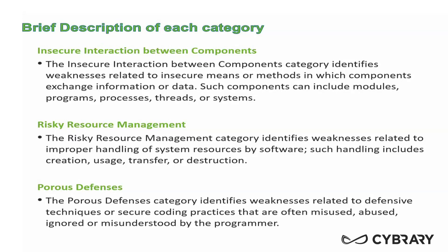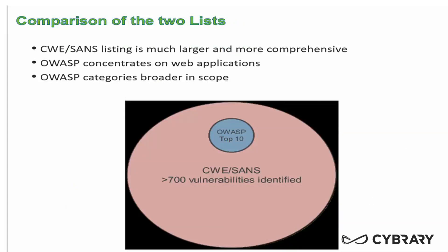Insecure interaction between components is exactly that — where you've got some sort of weakness that can occur during the exchange of information or data, or in the interaction of components, modules, or programs together. Risky resource management has to do with the handling of your system resources in some sort of weak or risky manner. Porous defenses is where programmers actually do put some sort of defensive technique in place, but unfortunately it's not done correctly or it's misunderstood. The CWE SANS listing has over 700 vulnerabilities or software errors identified, and OWASP is just a very small subset of those errors.